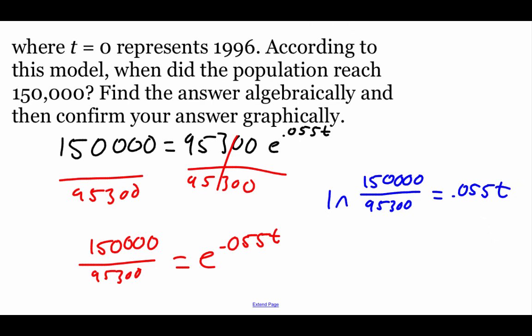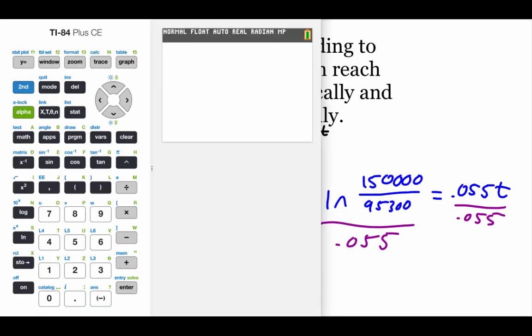And then all we have to do in order to get t all by itself is divide by that 0.055 on both sides. Now to get our answer, I'm going to use a calculator. So I'm going to type this in piece by piece. We've got the natural log of 150,000 divided by 95,300. I'm going to get a decimal answer there—we get 0.454 if we were to round it off. But then we have to divide by our 0.055. So we end up with a t value of about 8.25.